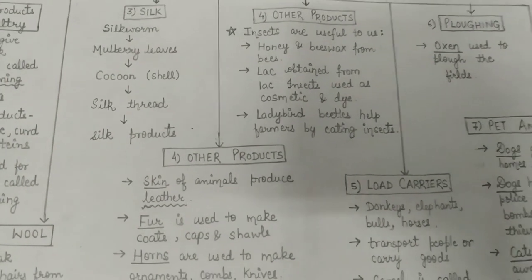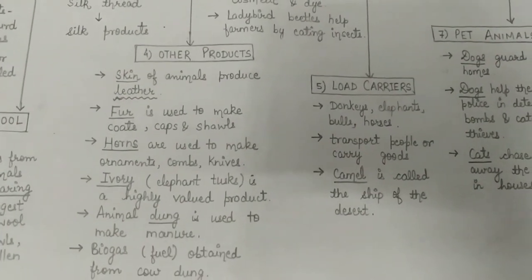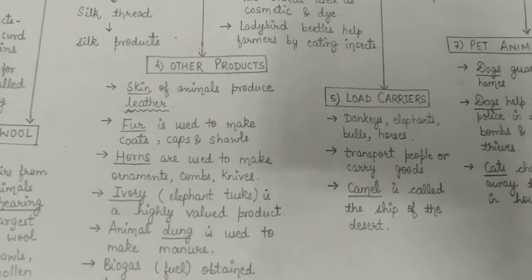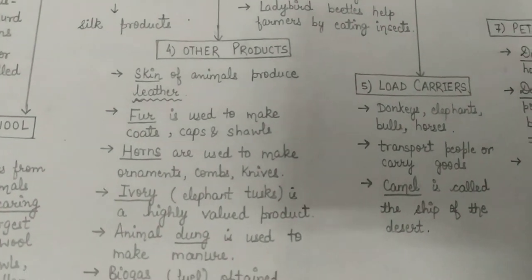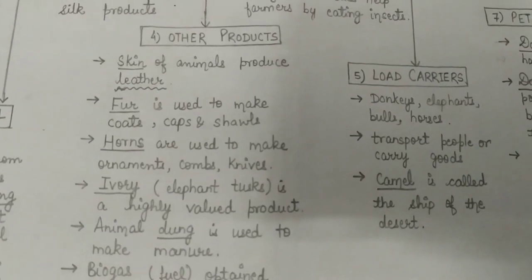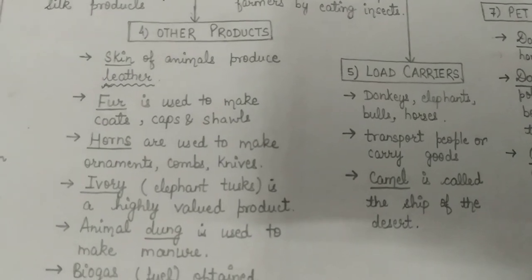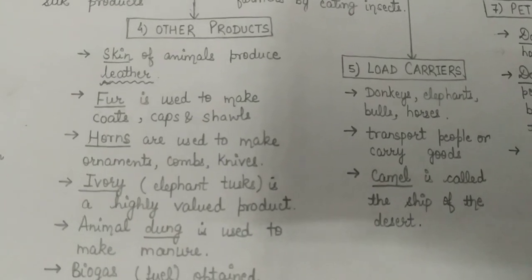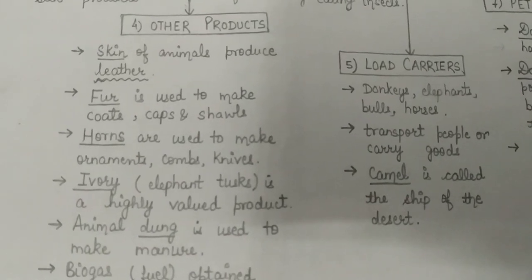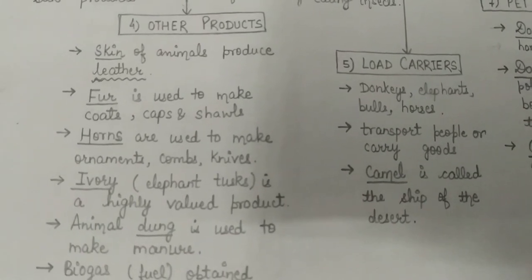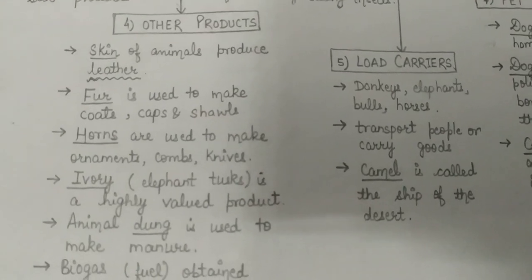Then come other products we get from animals. The skin of animals like buffaloes, cows, camels, and sheep is used to produce leather. In some countries, leather is also made from the skin of snakes and crocodiles. Leather is used to make shoes, bags, belts, wallets, jackets, and suitcases.